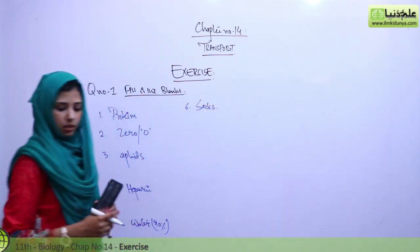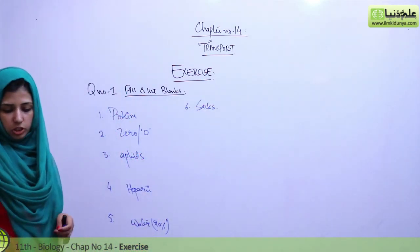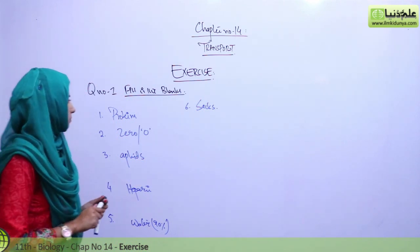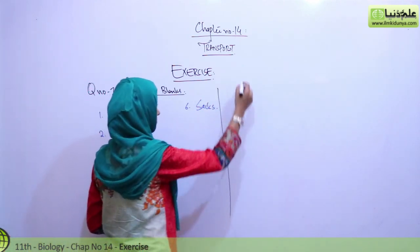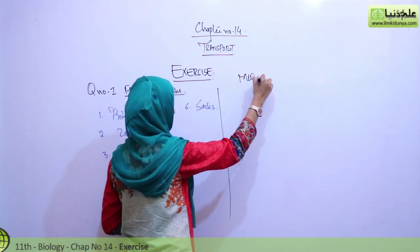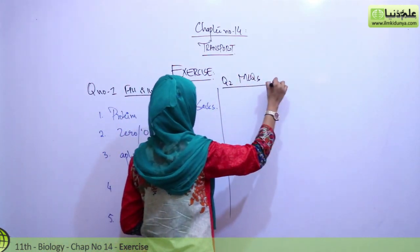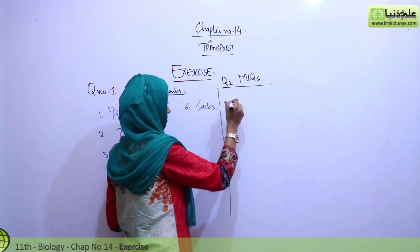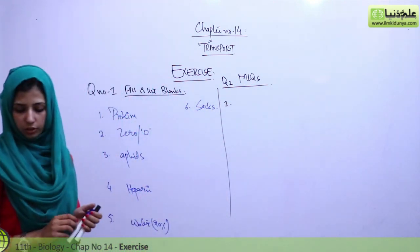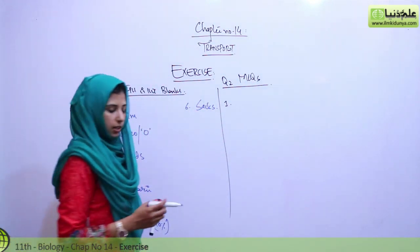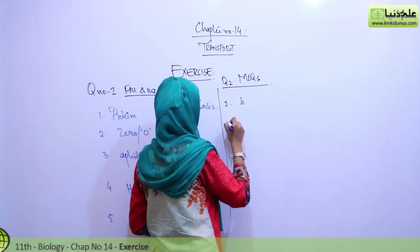After that, we have multiple choice questions. First is, which of the following is not true of guard cells? This is option B. They are connected by plasmodesmata. This is not true.